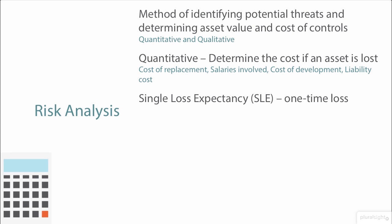A key term to know — especially for the exam — is Single Loss Expectancy, or SLE. This is the one-time cost of the loss. To calculate it, you need AV, the asset value in dollars, and EF, the exposure factor as a percentage: is it going to be a 100% loss or a 50% loss? The equation is straightforward: SLE = AV × EF.